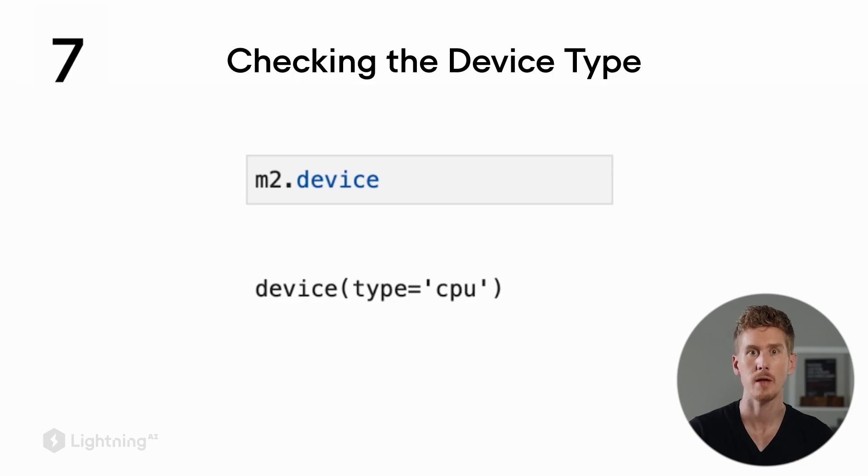We've seen that a tensor has a .dtype attribute that shows the type of the tensor. Tensors also have a .device attribute that shows where on our computer the tensor is located. Usually by default, calling .device on a tensor returns CPU, meaning the tensor is in the CPU's memory.